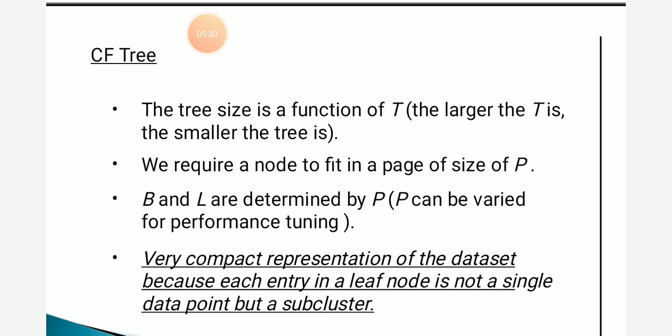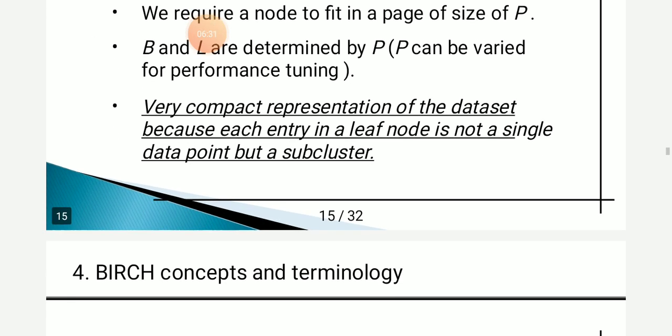The CF tree size is a function of T — when T becomes larger, the tree becomes smaller. We require a node to fit in a page of size P, and B and L are determined by P, which can be varied for performance tuning. The main advantage of this CF tree is that it is a very compact representation of the data set: each entry in the leaf node is not a single data point but a subcluster. In hierarchical clustering, each point is treated as a single cluster, but in BIRCH, we consider subclusters — this is the main difference.